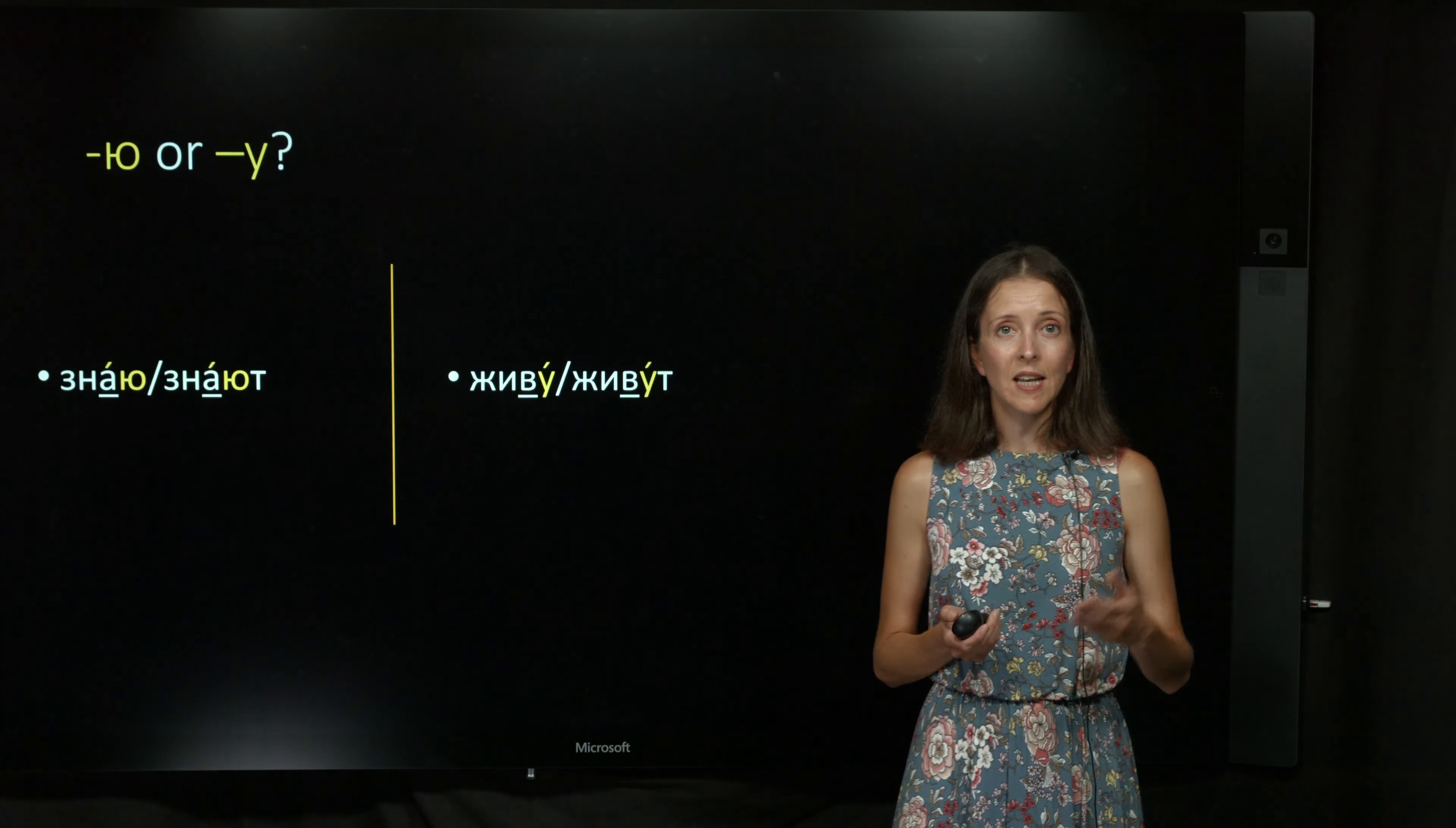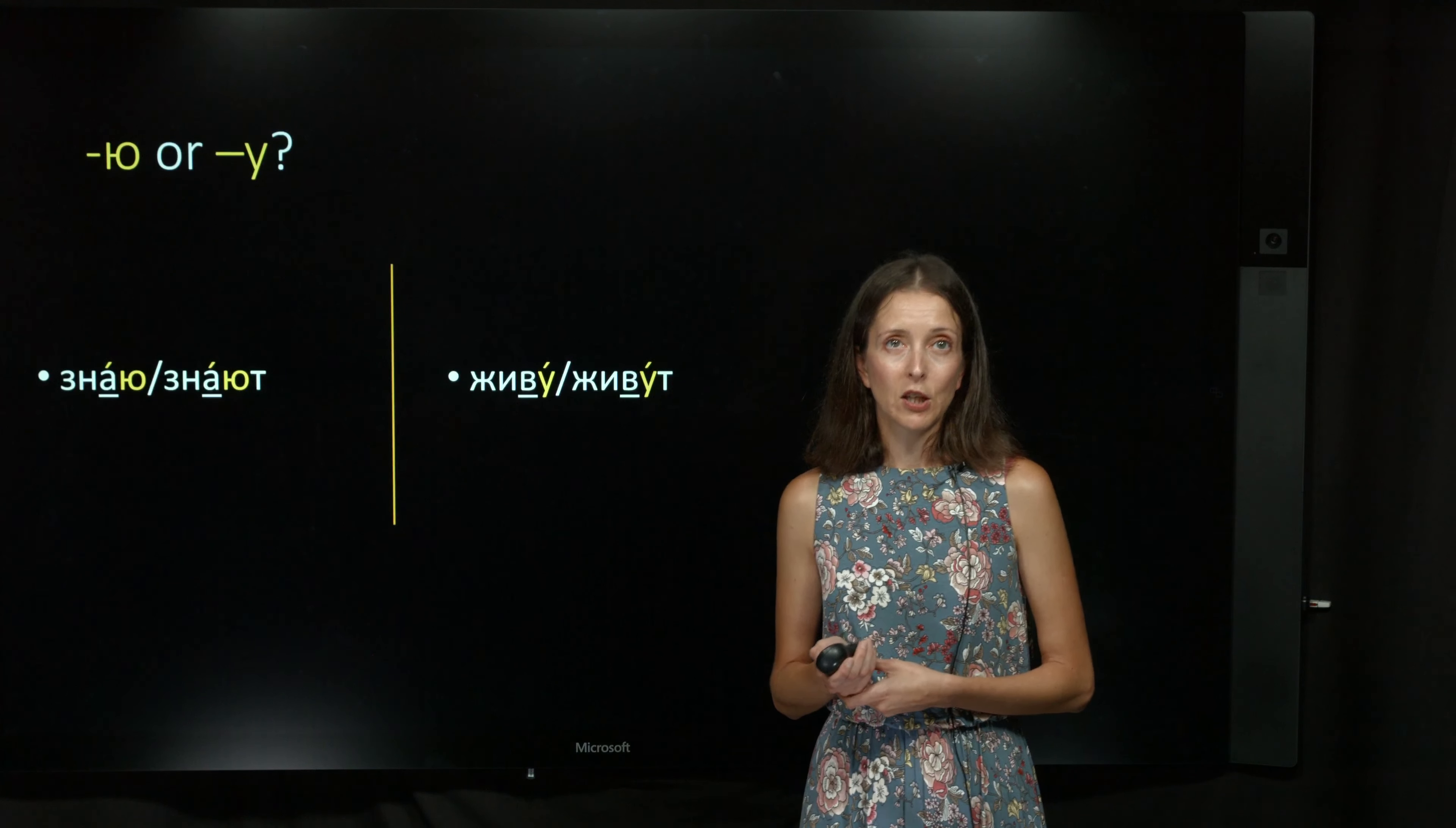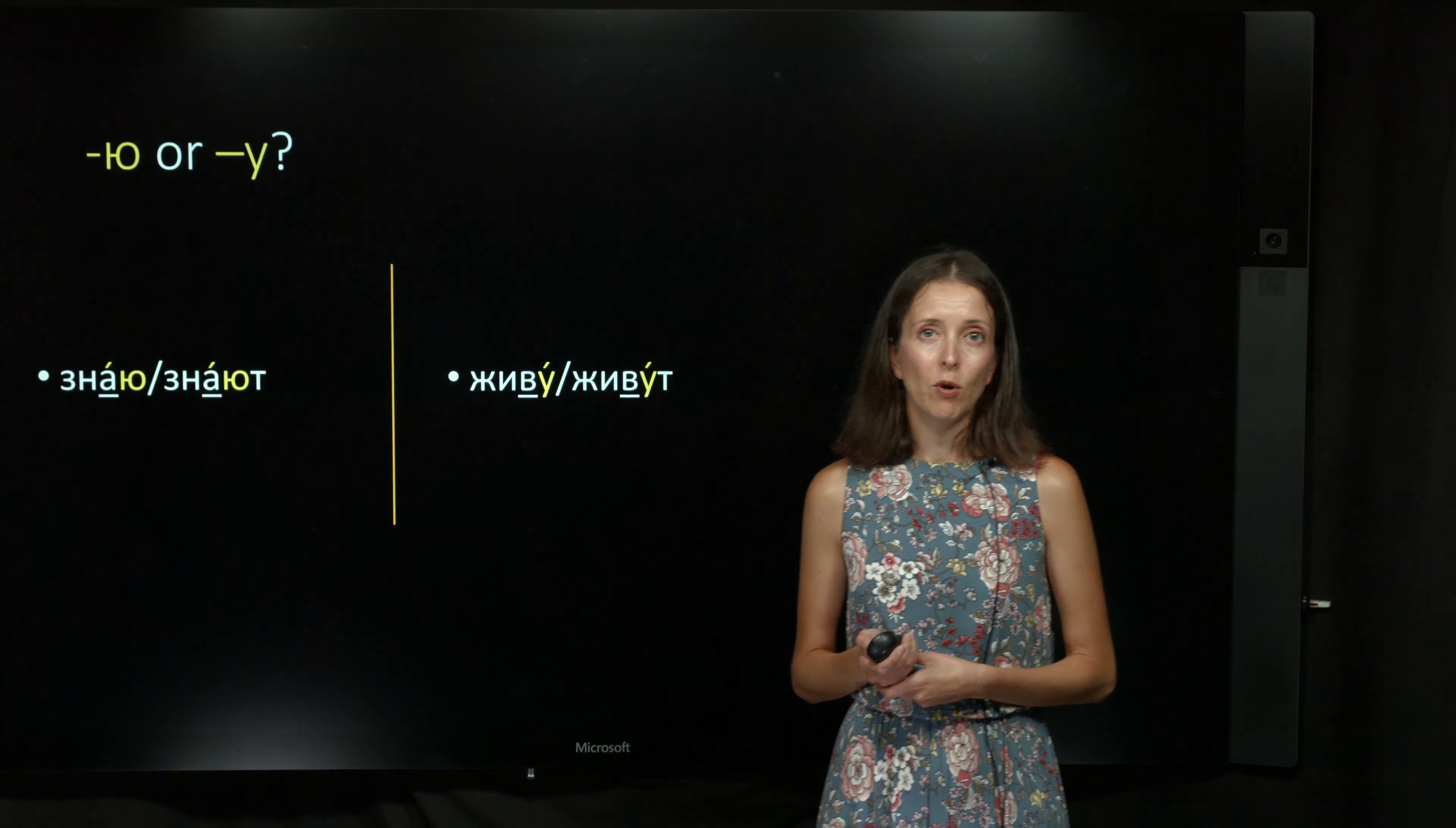why do some verbs, like знать, have the letter Ю in the Я and Они forms, and other verbs, like жить, have the letter У in the same forms?